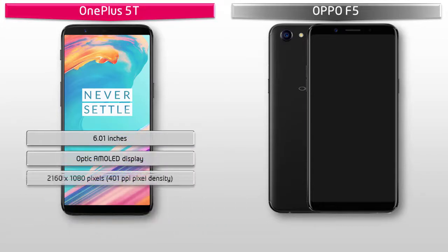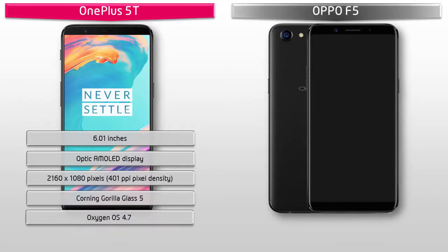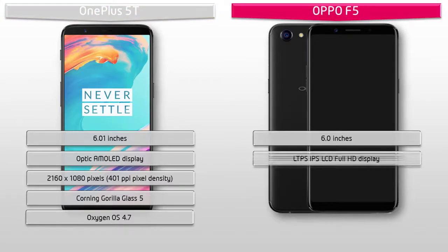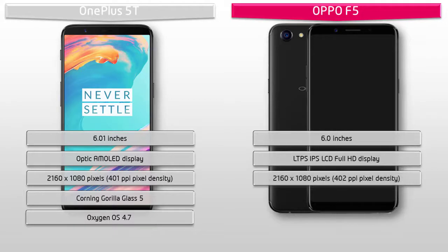The OnePlus 5T has a resolution of 2160 by 1080 pixels with 401 PPI pixel density. It features a single anodized aluminum body with 2.5D Corning Gorilla Glass 5 protection. The Oppo F5 is a 6-inch device with LTPS IPS Full HD display, having a resolution of 2160 by 1080 pixels and 402 PPI pixel density.